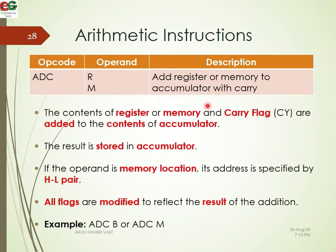Next is add with carry. The ADC instruction adds a register to the accumulator along with the carry flag. The result is stored in the accumulator. For example, A is equal to A plus B plus carry (C flag).